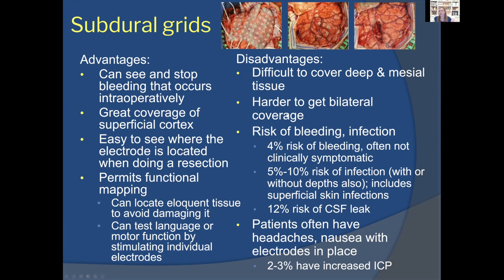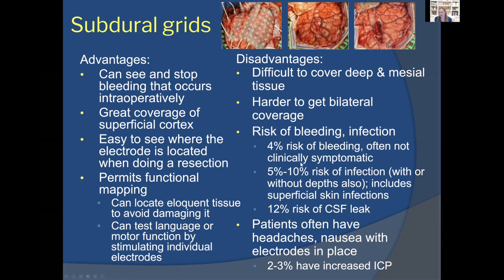Disadvantages of subdural grids include difficulty covering deep or mesial tissue. It's harder to map bilaterally — doing large craniotomies on both sides is uncomfortable and risky. There's approximately a four percent risk of bleeding, though it's often not clinically symptomatic and small amounts absorb on their own. There's also a small risk of infection, CSF leak, and patients commonly experience headaches and nausea while the electrodes are in place, as it is a relatively large surgery.